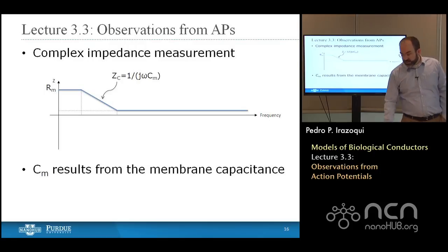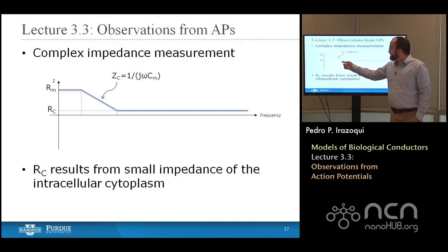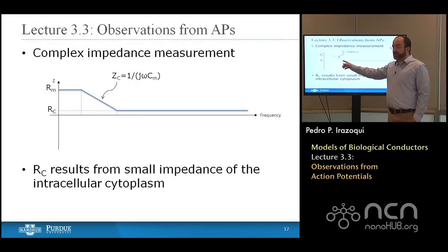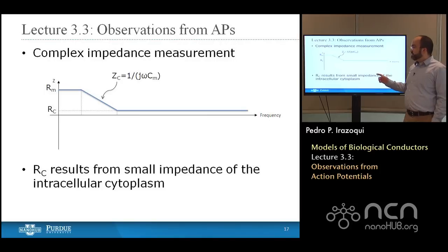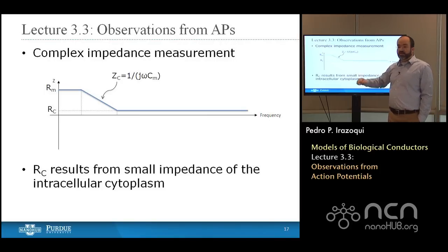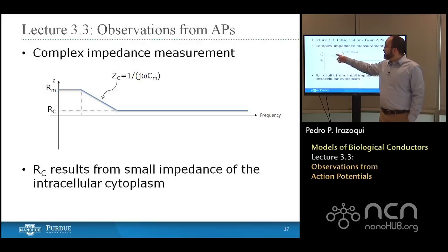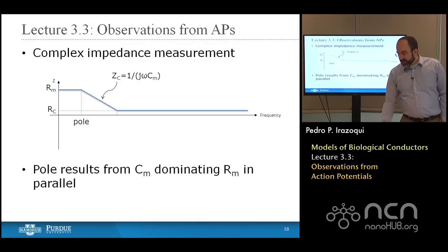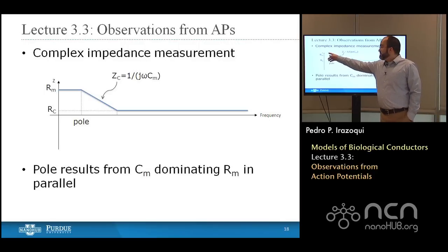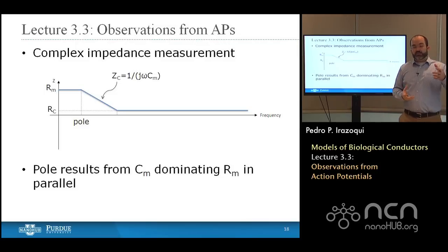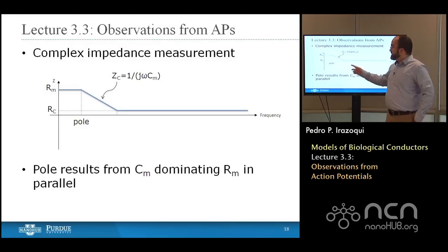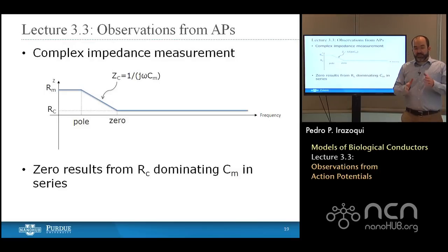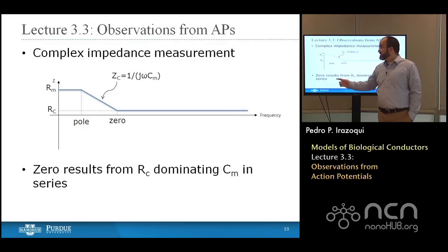At very high frequencies, the impedance settles back out and looks like a resistor again — that's R sub C, the cytoplasmic resistance. However, the frequencies at which R sub C begins to dominate are those at which biological signals do not occur. Biological signals of interest always fall in the domain where either Rm, the membrane resistance, or Cm, the membrane capacitance, dominates. We can calculate the pole — where Rm and Cm are equal and half the current flows through each — and the zero, where the impedance of Cm equals R sub C, at which point half the voltage drop is across each.